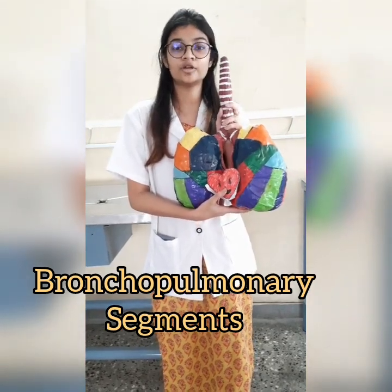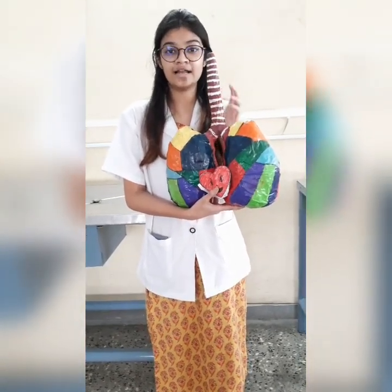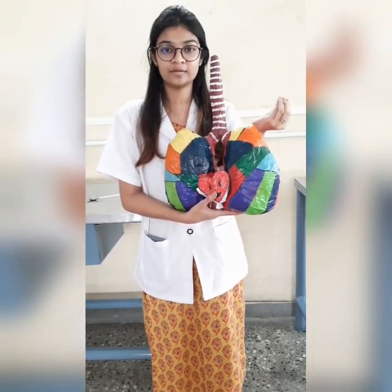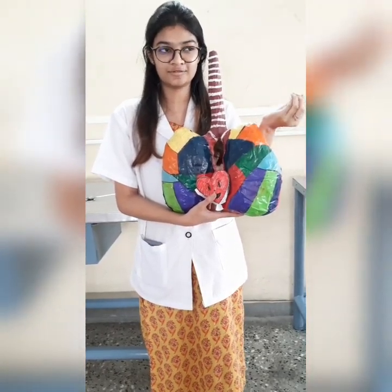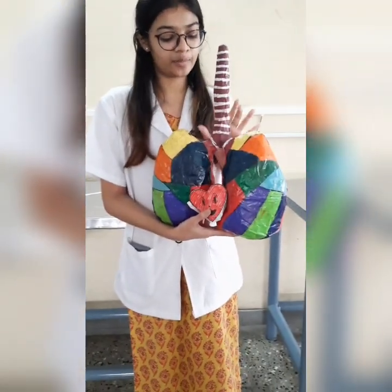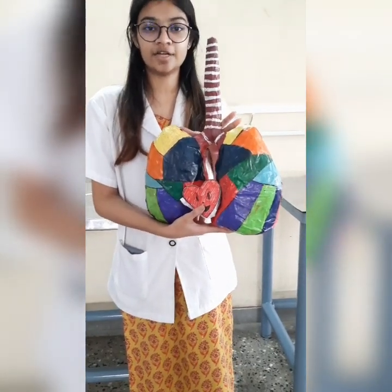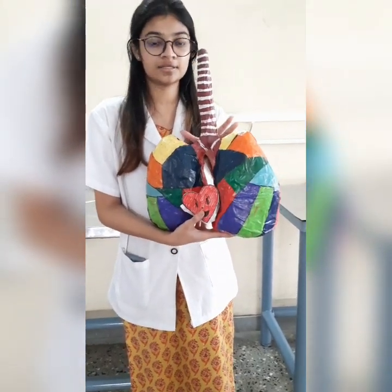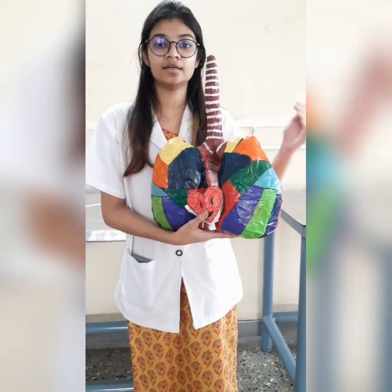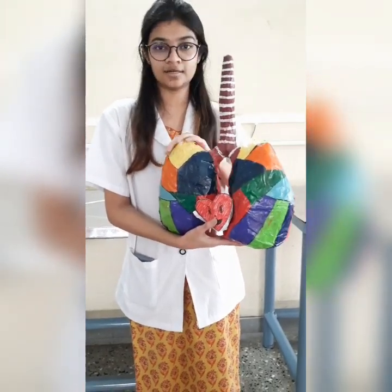These are important for surgical resection, as the infection takes place in one segment. The trachea divides into principal bronchi, which further divide into secondary or lobar bronchi, which are divided into tertiary bronchi — the bronchopulmonary segments — which are ten in number and each are present in each lung.